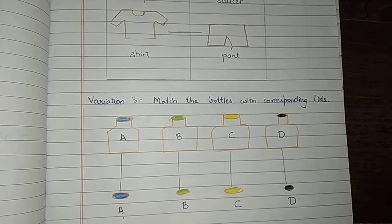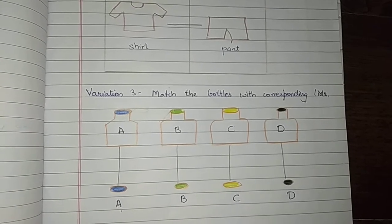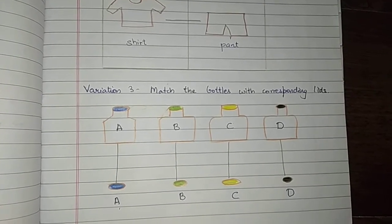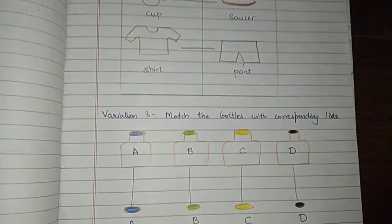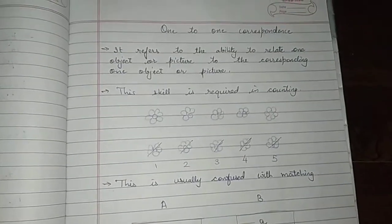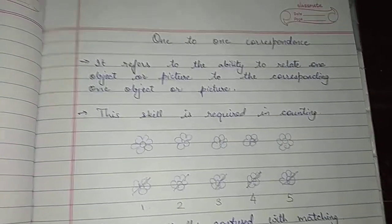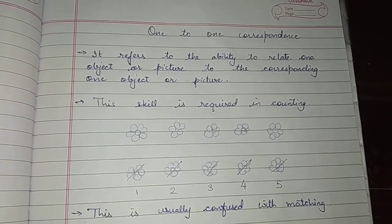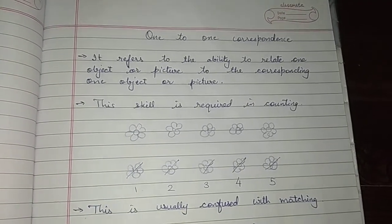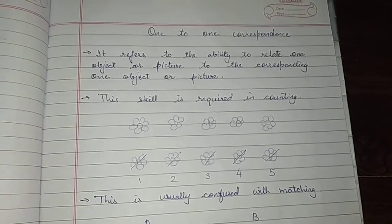For example, here there are four bottles with different color lids and one bottle will have only one lid. So, this also helps the child to understand one to one correspondence. Finally, one to one correspondence means practicing relating one object to one object. Thank you for watching this video.